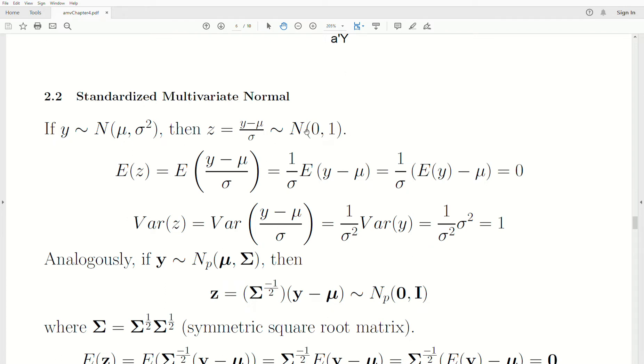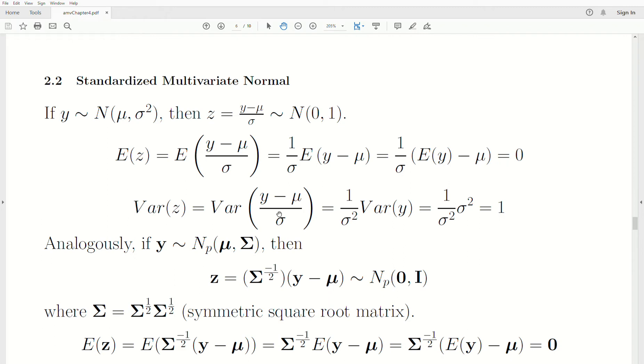Now to show that it is that, we take the expected value of Z. We put in what Z is. The constant comes out front. Expectation goes in. Expected value of Y minus mu is 0, right, mu minus mu. Now the variance of Z is the variance of this transformation. The constant comes out front squared. Constants don't play a part of variance, so we get rid of it. The variance of Y is sigma squared. Then times 1 over sigma squared is 1. So it is true, at least the theoretical aspects of it.